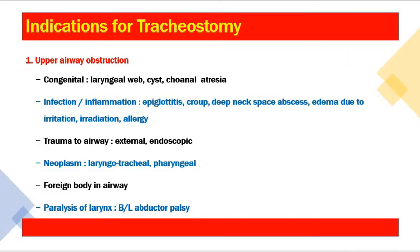The most common indication for tracheostomy is upper airway obstruction. Causes include congenital anomalies like laryngeal web, cyst, or choanal atresia; infective or inflammatory conditions like acute epiglottitis, croup, and deep neck space infections or abscesses; edema due to irritation, irradiation, or allergy; trauma — external such as road traffic accidents or physical assaults, or endoscopic; neoplastic conditions like laryngotracheal or pharyngeal malignancies; foreign body in the upper airway; and bilateral abductor paralysis, where the patient cannot abduct their vocal cords.